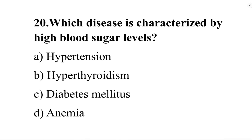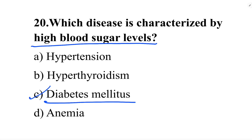Next question: which disease is characterized by high blood sugar levels? Option A: hypertension. Option B: hyperthyroidism. Option C: diabetes mellitus. Option D: anemia. The correct answer is option C, diabetes mellitus.